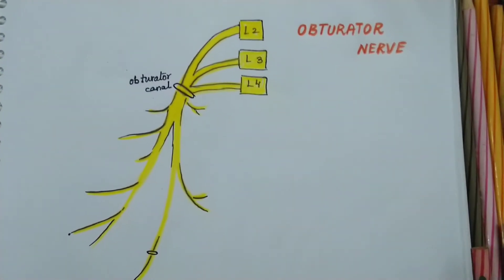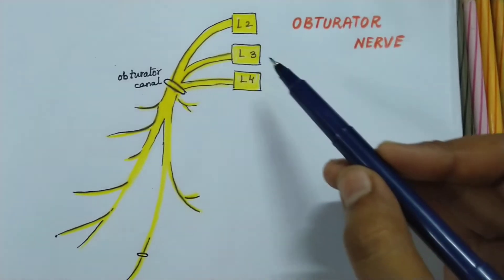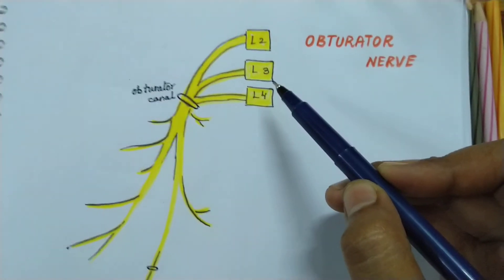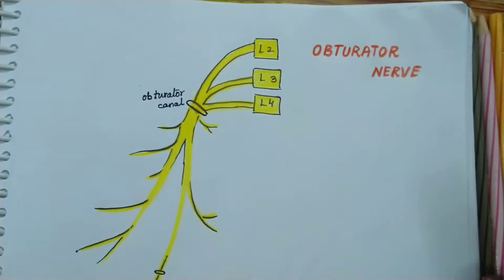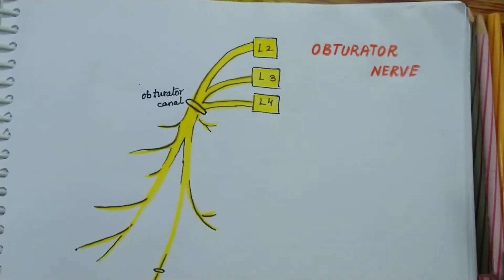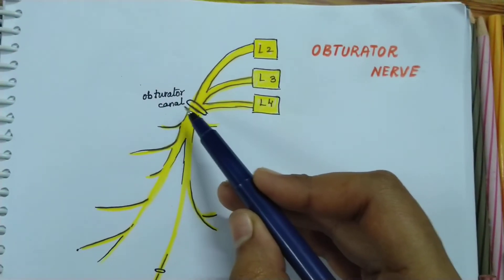It is formed by the ventral division of the anterior primary rami of the L2, L3, and L4 spinal nerves. It enters the thigh by passing through the obturator canal.